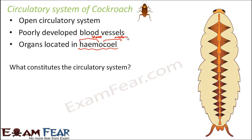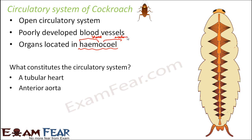The circulatory system is made up of different parts: a tubular heart, the anterior aorta, and sinuses. These are the three major components which together form the circulatory system in cockroach.